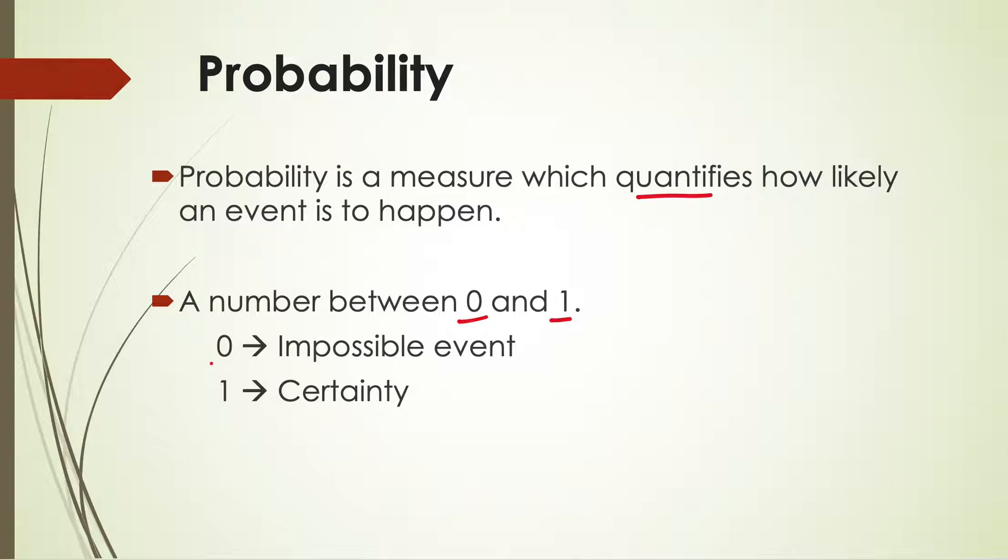The least value that it can take is zero. In that case it will mean an impossible event - that event cannot happen. And if its value is one, which is the maximum, then that event will certainly happen.